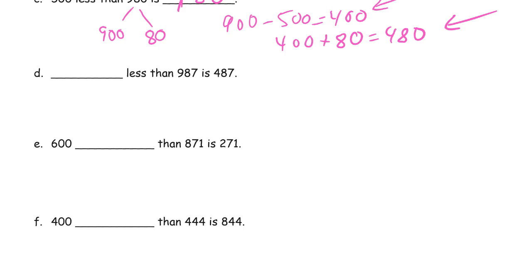Something less than 987 is 487. So we can do this with number bonds. 900 and that's 87.